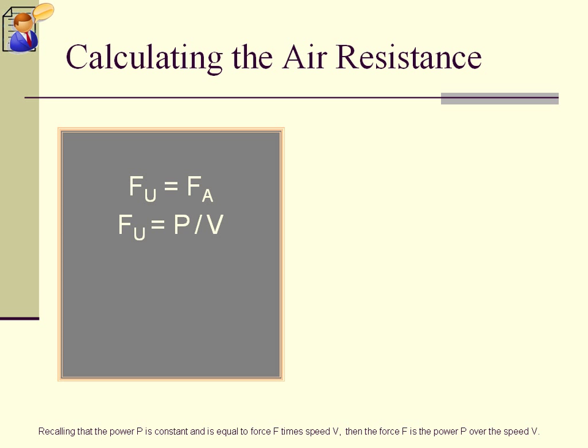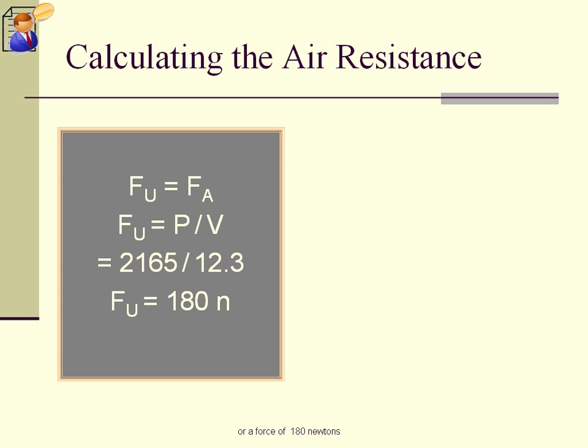Recalling that the power P is constant and is equal to force F times speed V, then the force F is the power P over the speed V. Substituting the known constant values, we get 2165 over 12.3, or a force of 180 Newtons. And from the first equation above, this is equal to the value of the air resistance force.